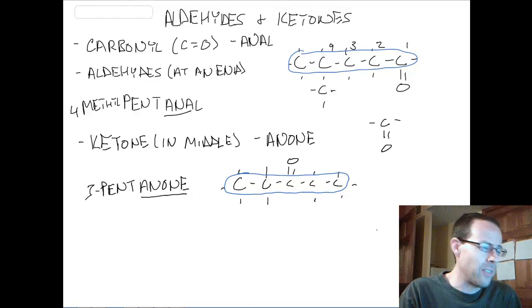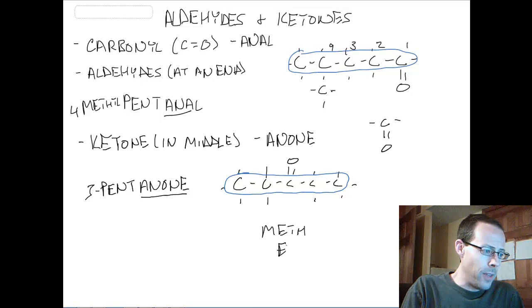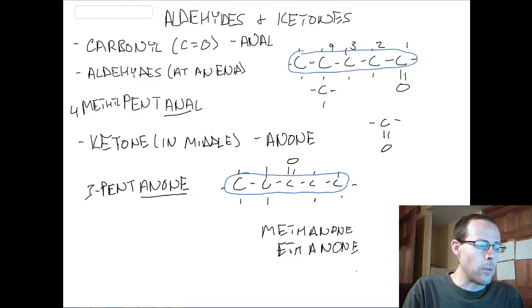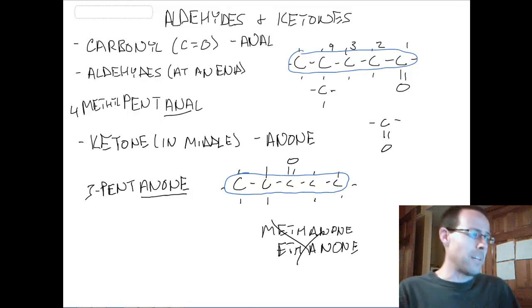So it's interesting. We can never, ever, ever, have a methanone or an ethanone. How come? Because neither of these have middle carbons. All their carbons are on the outside or carbon number ones. So these two never exist. Our first ketone has to be propanone. And that is it for the carbonyl functional group, which makes up aldehydes and ketones.